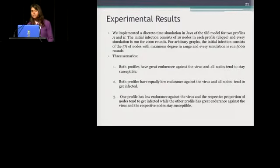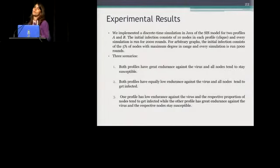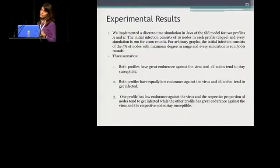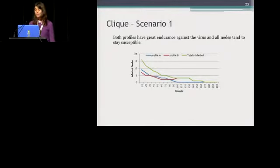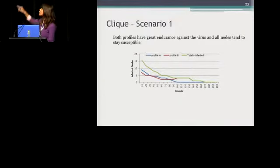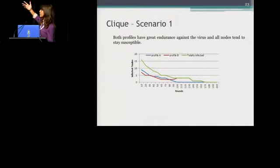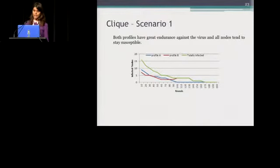In the experimental results, we implemented a discrete-time simulation on both cliques and arbitrary graphs, with three scenarios: high, low, and mixed, as described earlier. For the clique in scenario one, as you can see, in the first 200 rounds the virus dies out as expected, since both profiles have very low sensitivity against it.